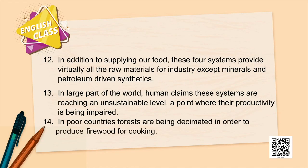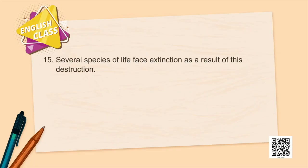In poor countries, forests are being decimated in order to produce firewood for cooking. Even in 1994, the majority of the world's population used wood for cooking, so forests are getting decimated. Several species of life face extinction as a result of this destruction. The California fire, the Australia fire, have eliminated more than 40,000 animals. Even the Amazon forest fire has affected flora and fauna drastically.